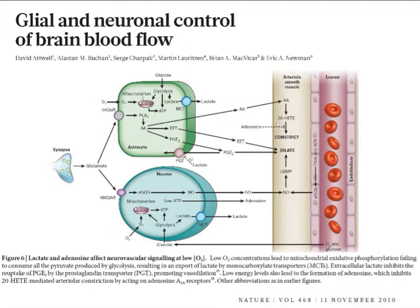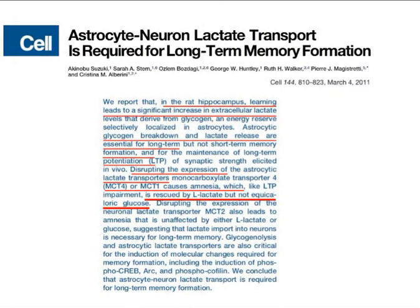This demonstrates the role of lactate. A review shows glial and neuronal control of brain blood flow — under low oxygen conditions, lactate produced by glycolysis is important in regulating blood flow and acts as a vasodilator. A recent contribution shows that lactate transporters are essential for long-term memory formation: deleting lactate transport causes amnesia in mice, and interestingly, amnesia can be rescued by administering lactate but not glucose.